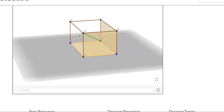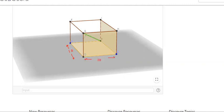So 10, 10, 5. Length is 10, so that means this part is 10. This part is 10, breadth is 10, and height is 5.